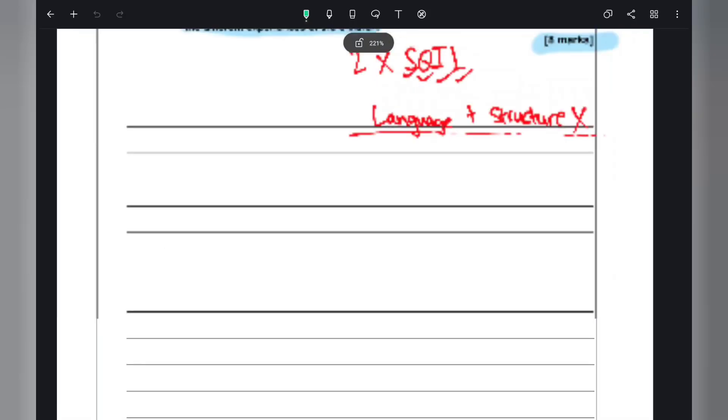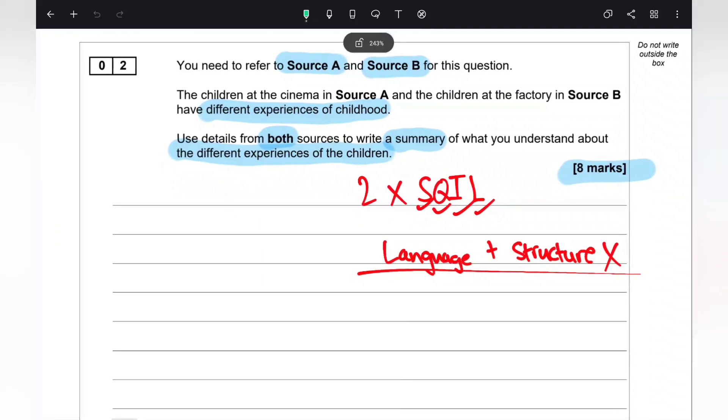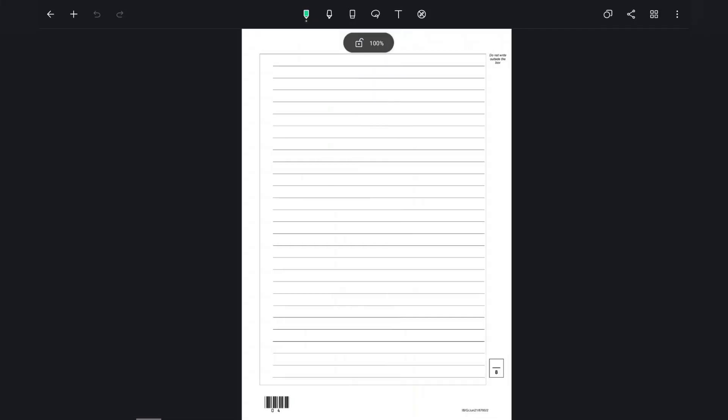For Question 2, remember: do not talk about language here. You don't score any marks for language. You're simply writing a summary of the different experiences. You may use the acronym SQIL: Statement, Quotation, Inference, Link. Do two paragraphs to score eight out of eight. No marks for language or structure here. Spend 10 minutes on that, then move on.